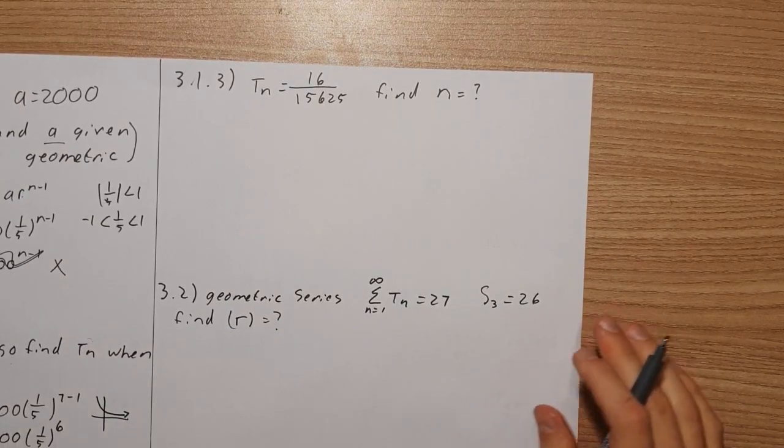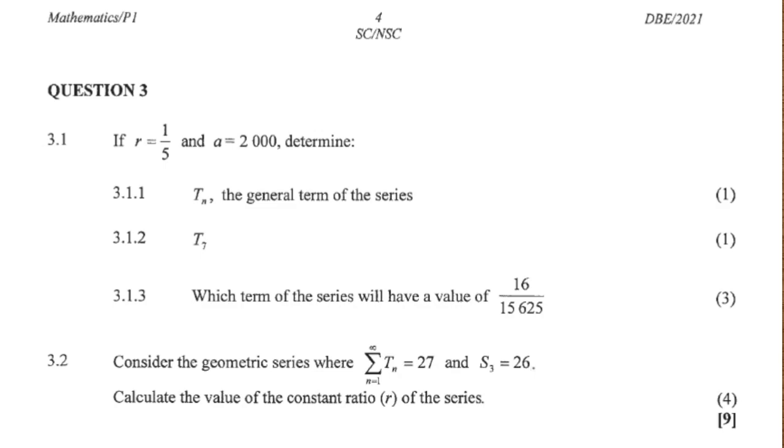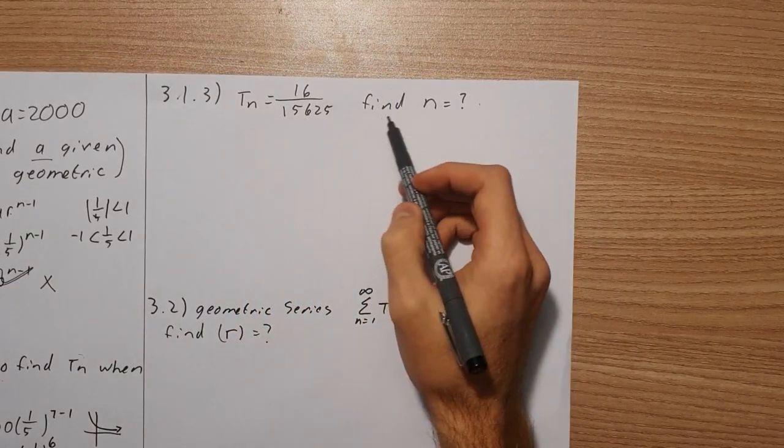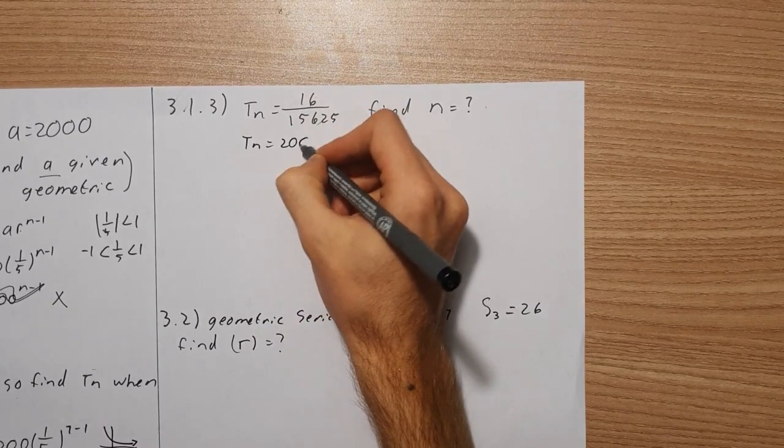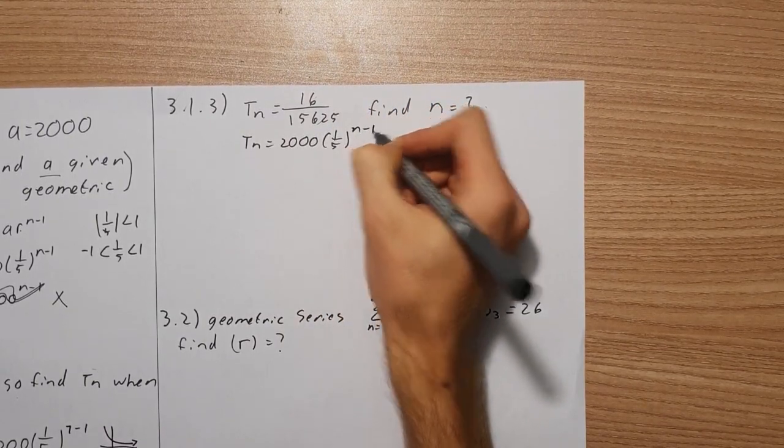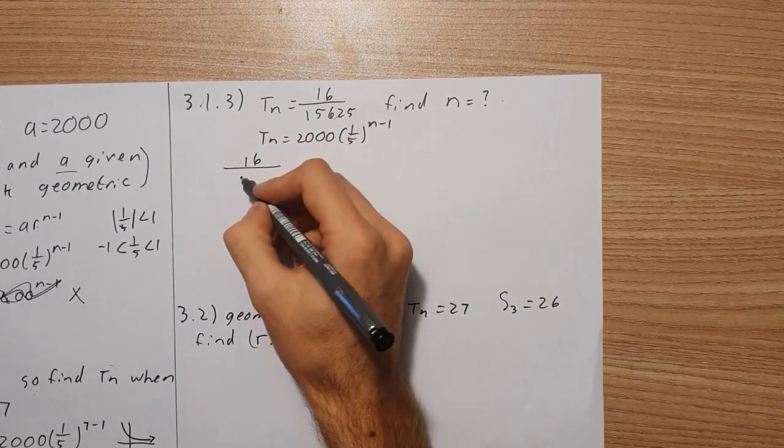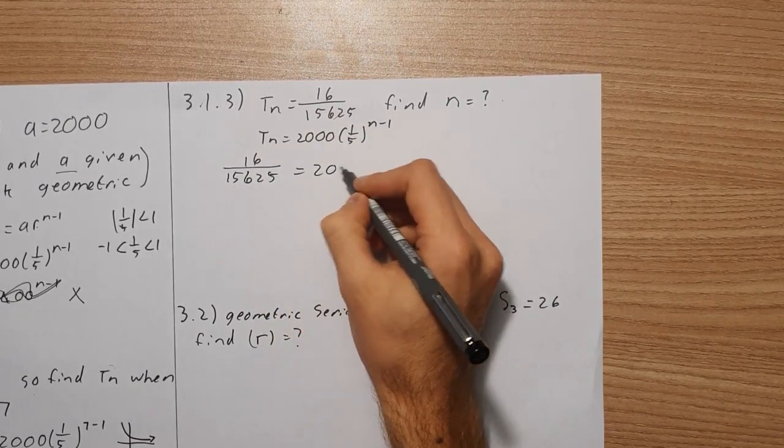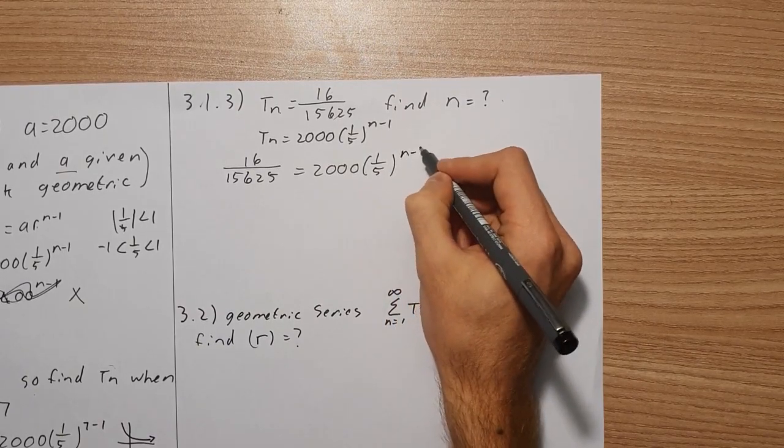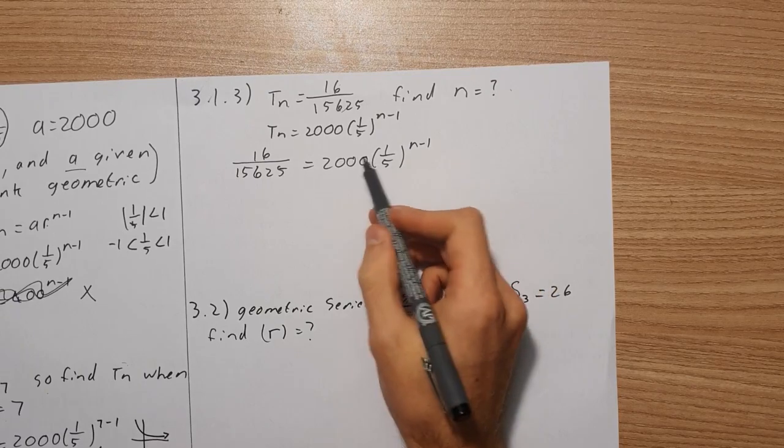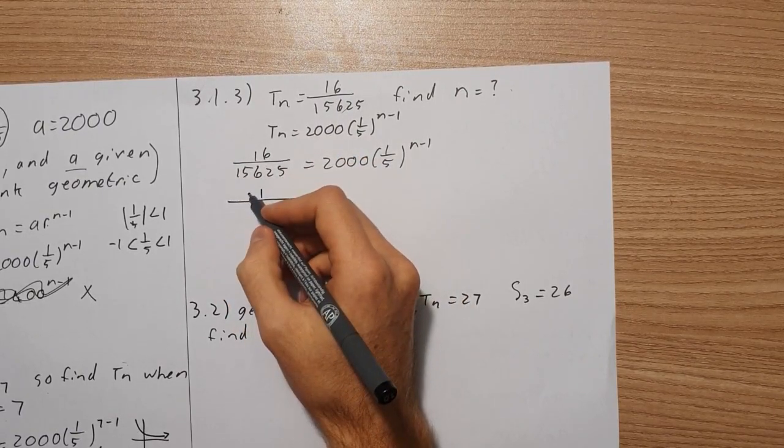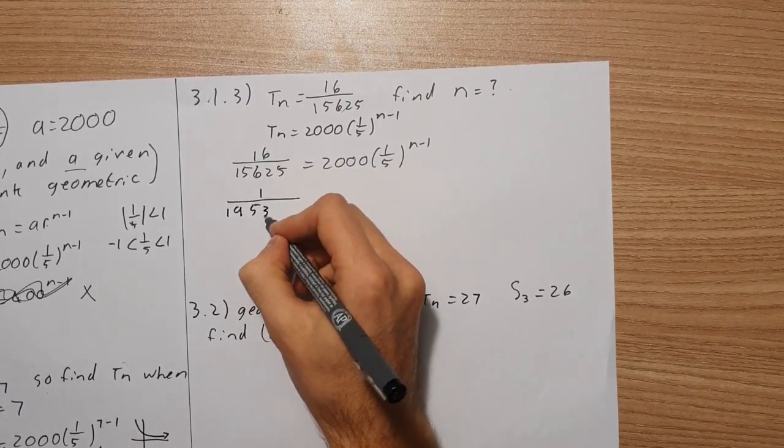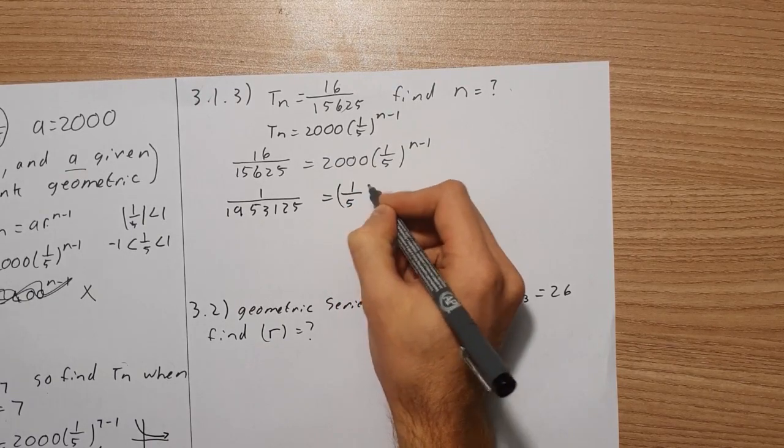Now let's look at 3.1.3. It says which term of the series will have a value of 16 over 15,625. As you can see, because they've given us Tn, we need to find what n is. We know that Tn equals 2000 times 1 over 5 to the n minus 1. So we need to find 16 over 15,625 equals 2000 times 1 over 5 to the n minus 1. The first thing we're going to do is divide both sides by 2000. If you do that, you're going to get a value of 1 over 1,953,125 equals 1 over 5 to the power of n minus 1.